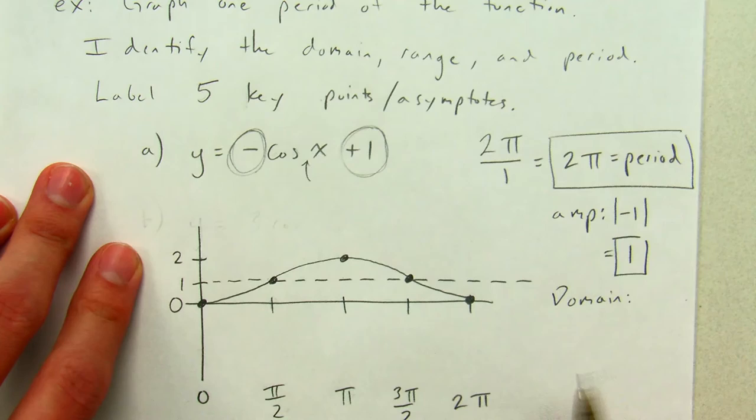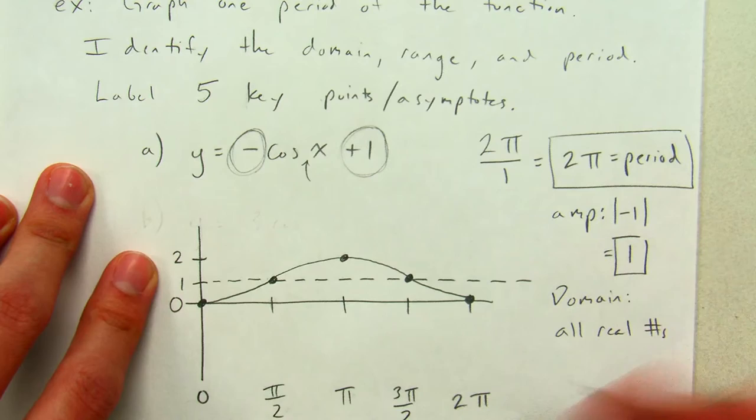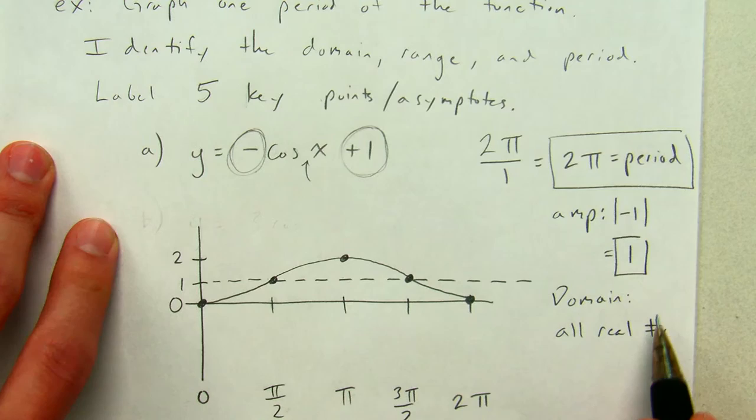Let's make sure I've given all the information I want. Domain. For sine and cosine, domain is so easy. All real numbers. This graph extends forever to the left and the right. There are never any asymptotes or holes. So there's the domain.